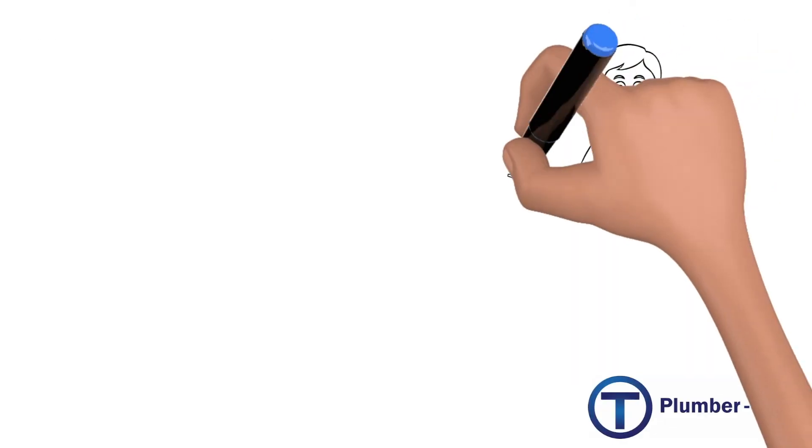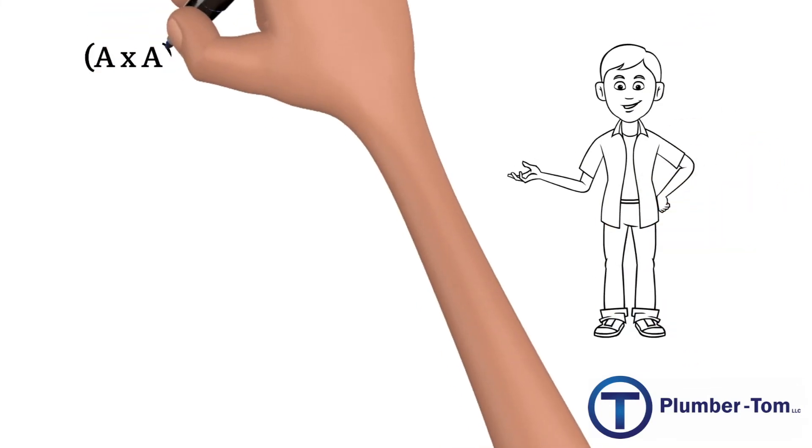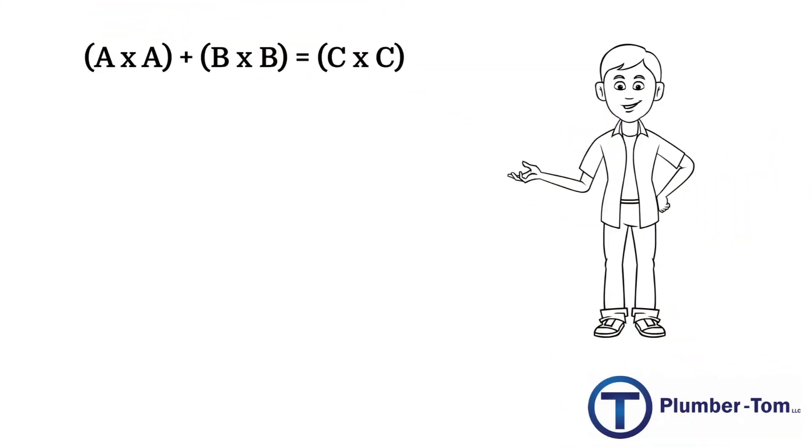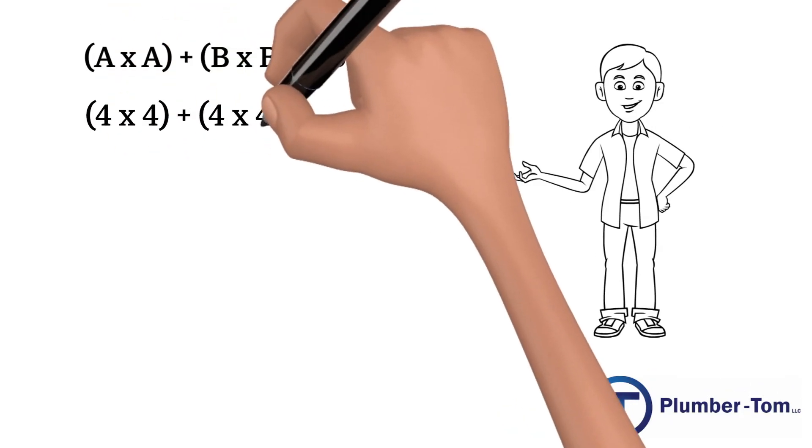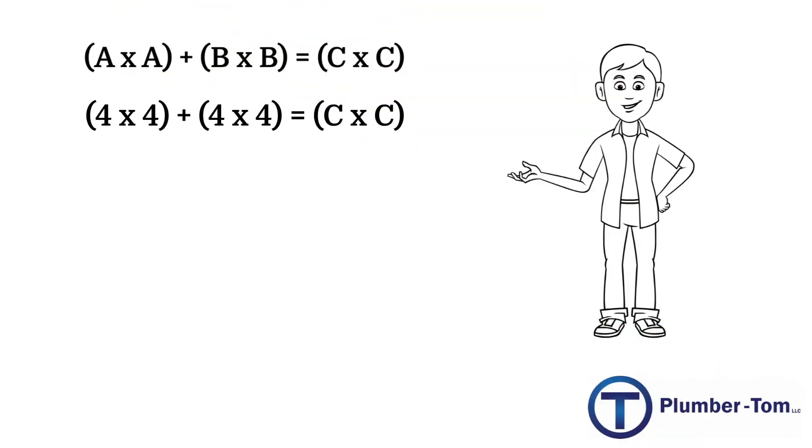Once again we will begin with the Pythagorean theorem. a times a plus b times b equals c times c. For us on this triangle, 4 times 4 plus 4 times 4 equals c times c.